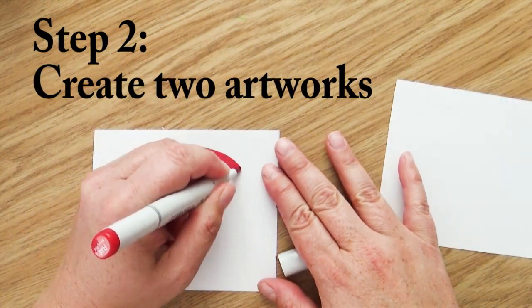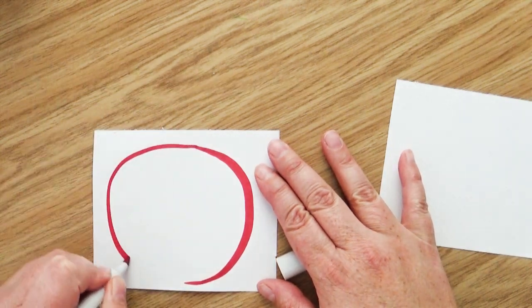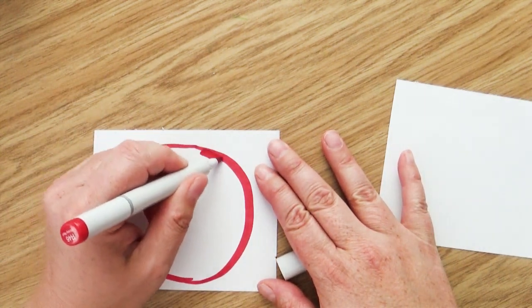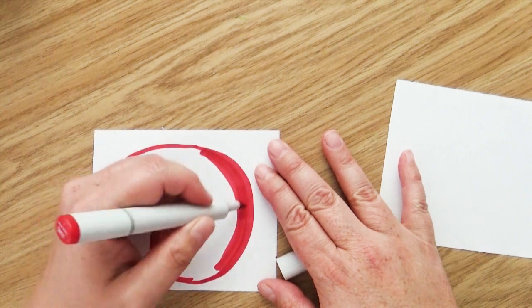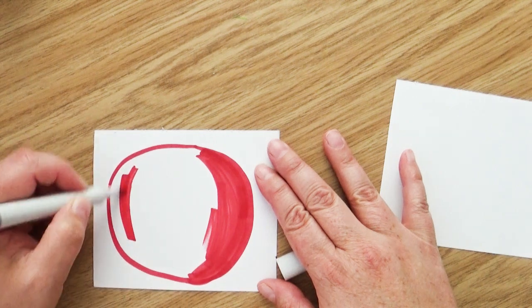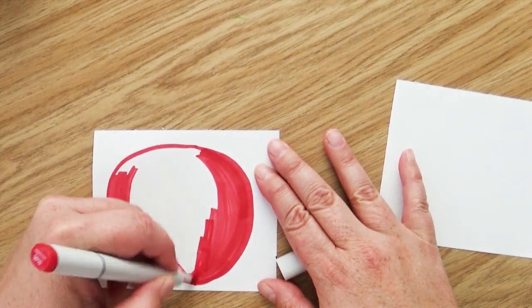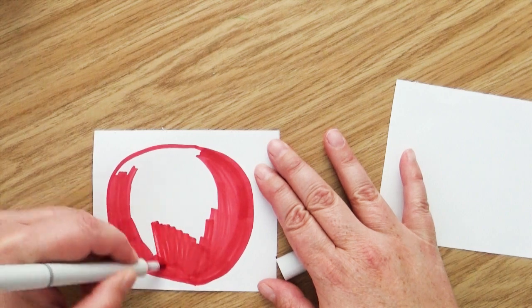This step is probably my favorite because it's where we get to be the most creative. On the two pieces of paper that we just finished cutting, I want you to create two different artworks. Now, it can be of anything. But here are a couple of tips to make your magic artwork look even better.